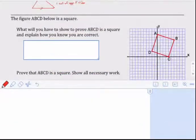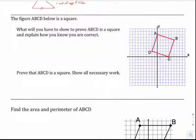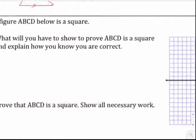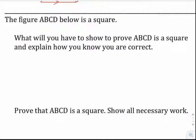Let's go down to this question: figure ABCD below is a square. What will you have to show to prove that ABCD is a square? And explain how you know you're correct. Well, what they're asking us to write here is a statement of intent. If you think about the definition of a square, that's really what they're asking to identify — like what does it actually take to be a square?